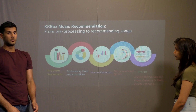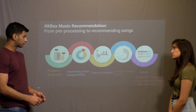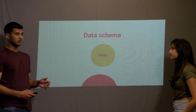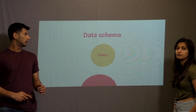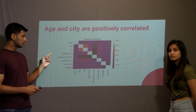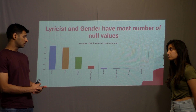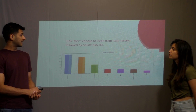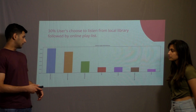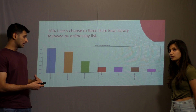We'll talk about the exploratory data analysis we did for our project before building the recommendation system. We wanted to create a data storyline, so we first looked at the data schema to understand how our data looks. We examined the correlation between feature variables in our training dataset, observing that city and age are positively correlated. We also found that literacy and gender make up the majority of null values. Looking at source type distribution, the majority of users fall into three categories, with two-thirds preferring to listen to songs locally.